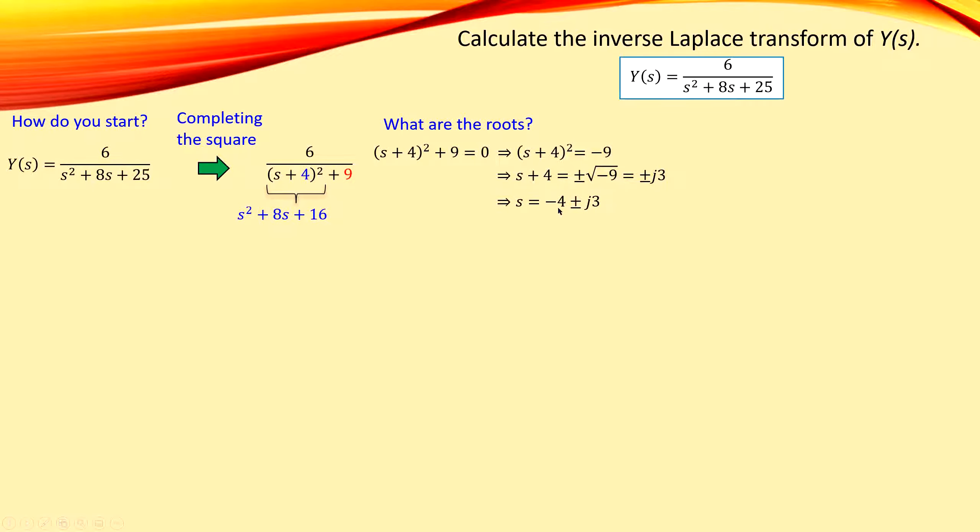If you work this out in the following step, you will get s is equal to minus 4 plus or minus j3. So the roots are s1 that will be minus 4 plus j3, and the second root will be minus 4 minus j3. So these are the roots for this situation.